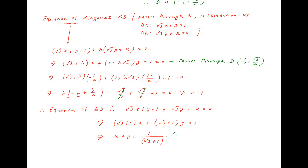Multiplying and dividing the right-hand side by the conjugate of the denominator, that is (√3 − 1), we get (√3 − 1)/(3 − 1) = (√3 − 1)/2. Therefore, the equation of diagonal BD is x + y = (√3 − 1)/2.